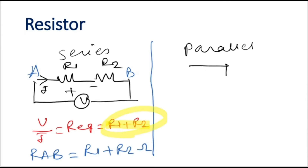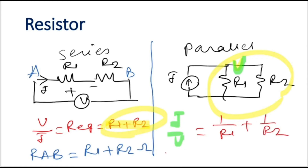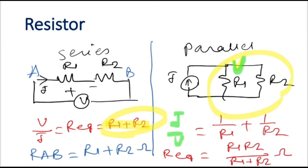If we have a parallel network where two resistors are connected in parallel with a current source, there is a common voltage V across both. I by V equals 1 by R1 plus 1 by R2, so R equivalent is equal to R1 R2 divided by R1 plus R2 ohms. This is the basics of resistor. In the next session we will discuss KVL, KCL, voltage division rule, and current division rule.